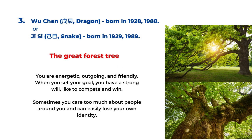The third personality is for Wu Chen and Ji Si, for birth years 1928, 1988, 1929, or 1989. Remember to check the li chun if your birthday is before February 4th or 5th. This one is a wood element called the great forest tree. You are very energetic, easygoing, and friendly, and you have a very strong will. If you set up your goal, you like to compete and win — you are very competitive. Sometimes you care too much about people around you and can easily lose your own identity, so that's something to be careful about.